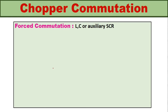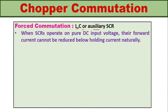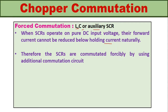In force commutation, we use a commutation circuitry to forcefully commutate the conducting SCR. The commutation components used in the force commutation circuitry can be an inductor, a capacitor, or an auxiliary SCR. When SCRs operate on a pure DC input voltage, their forward current cannot be reduced below the holding current naturally, so the SCRs must be commutated forcefully using additional commutation circuits.